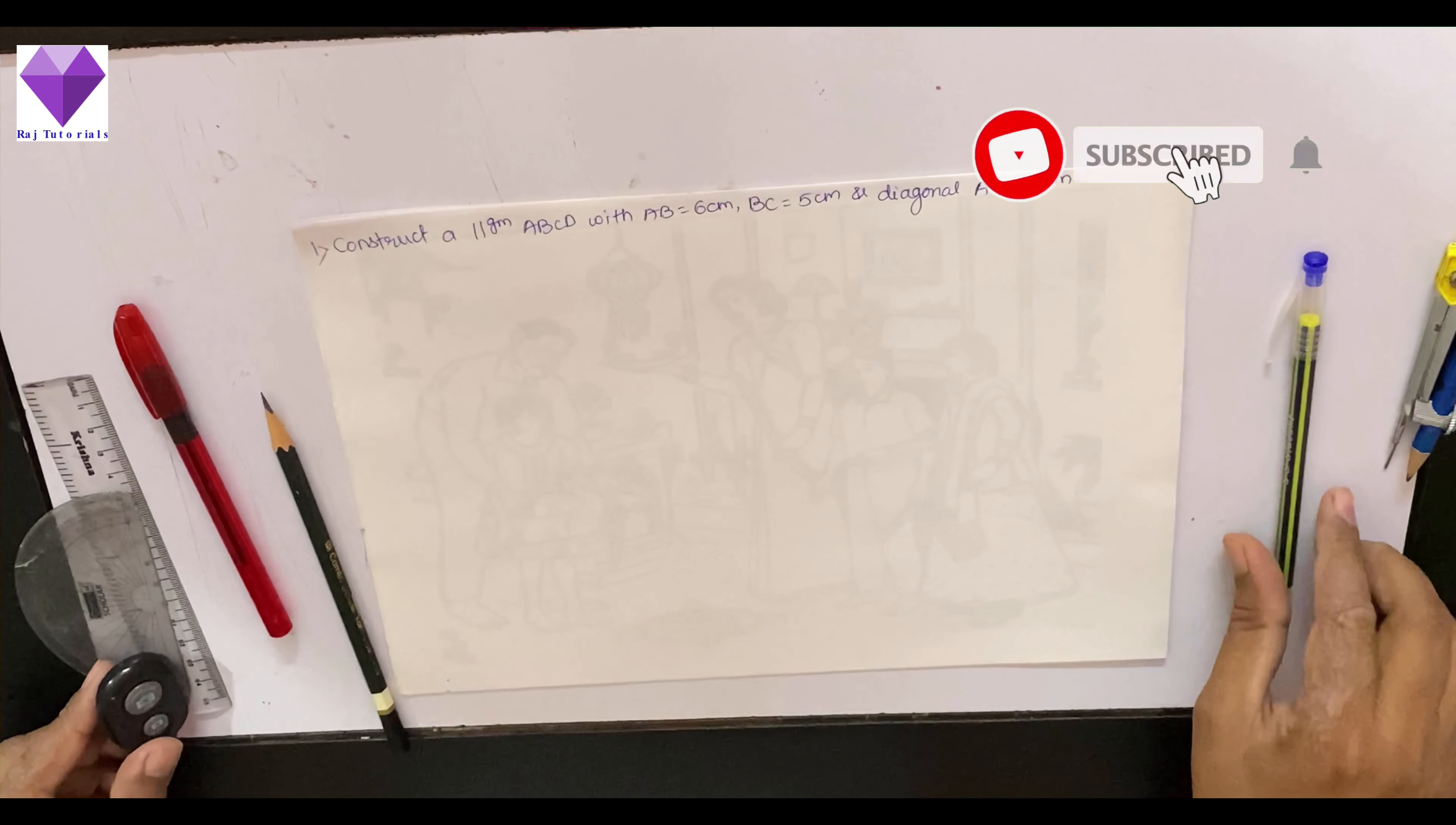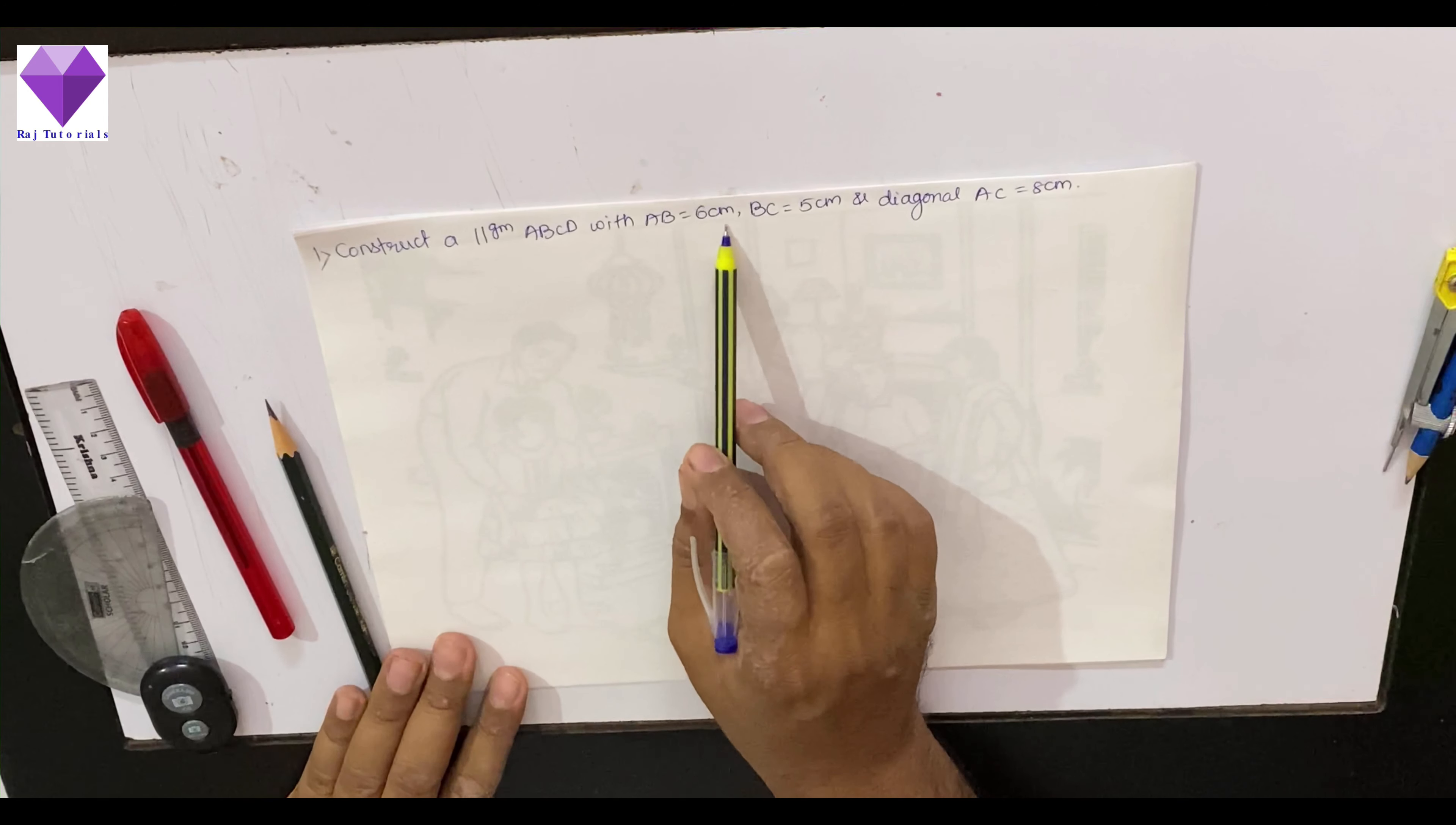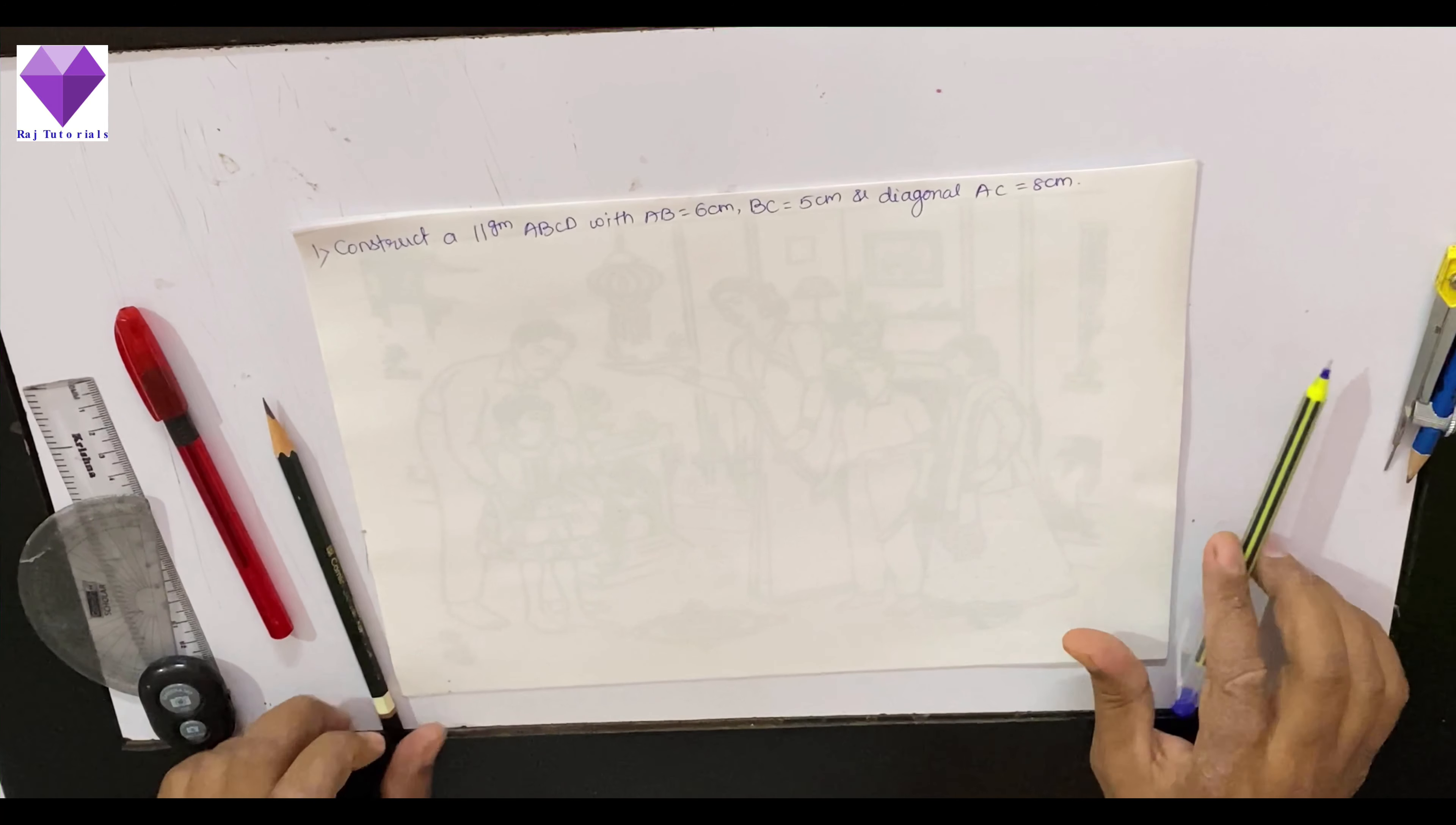Hello students, today we are going to construct a parallelogram ABCD with side AB equal to 6 cm, BC equal to 5 cm and diagonal AC equal to 8 cm.